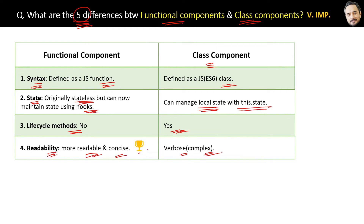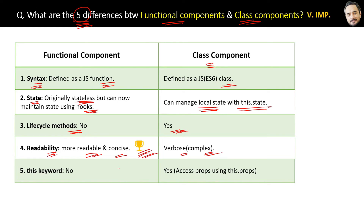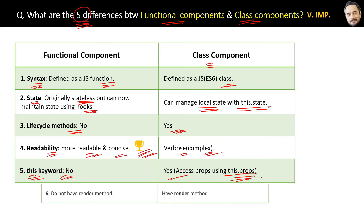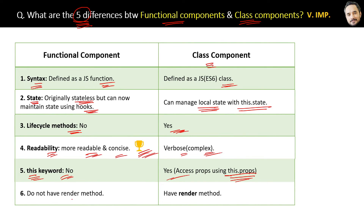Functional components are the clear winner in terms of readability. The fifth difference is that functional components do not have the 'this' keyword, whereas class components use 'this' to access properties. As a bonus, functional components do not have a render method, whereas class components require a render method to return the UI.